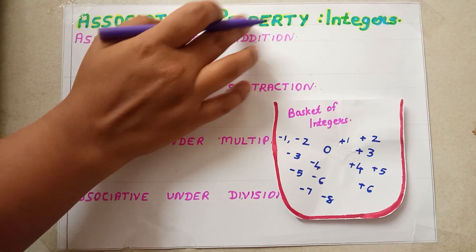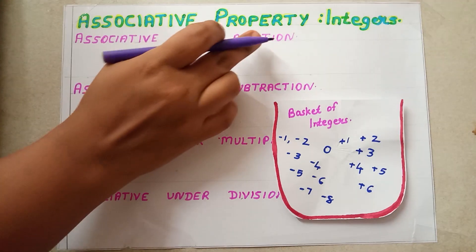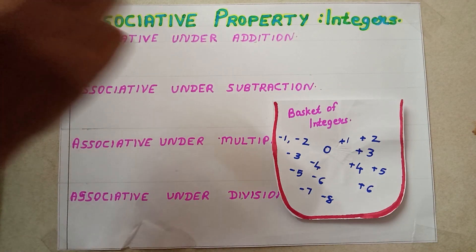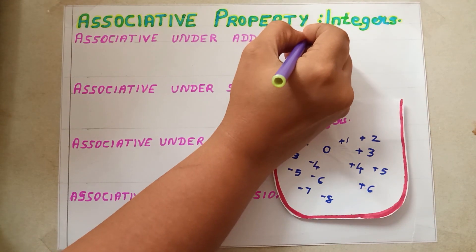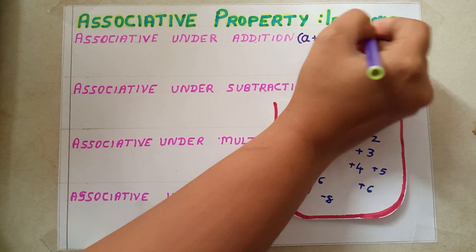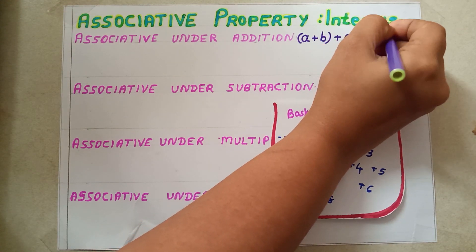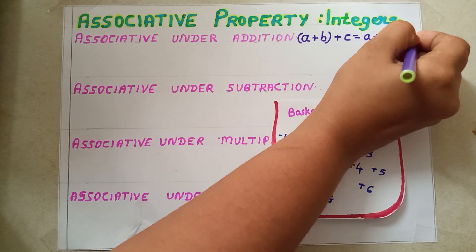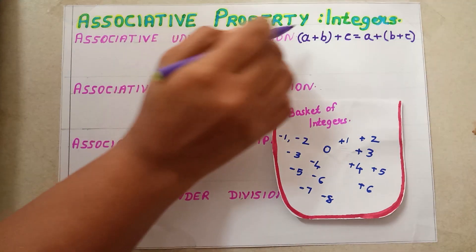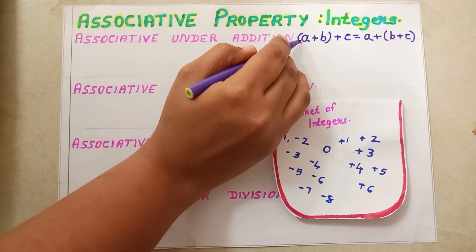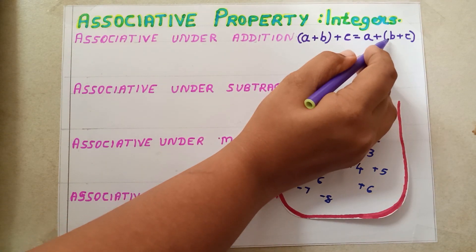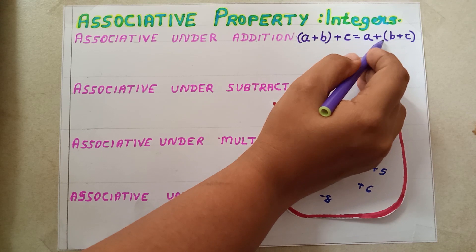Now we can discuss associative property of integers. Associative property under addition: we are going to check whether the integer set satisfies associative property under addition. For that we have to check if (A + B) + C equals A + (B + C). That means first we have to see that A, B, C are from the integer set. In the LHS, first find the sum of A and B, then add C. On the RHS, first find the sum of B and C, then add A.